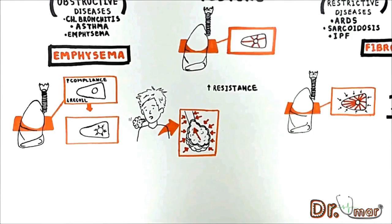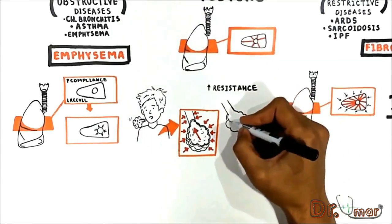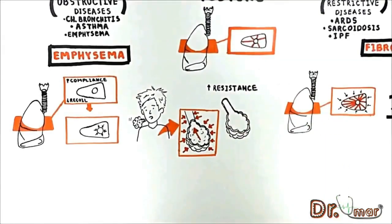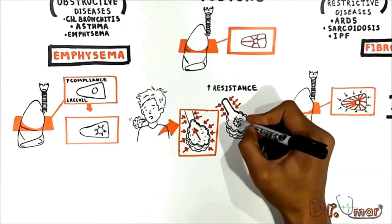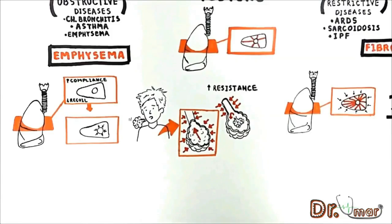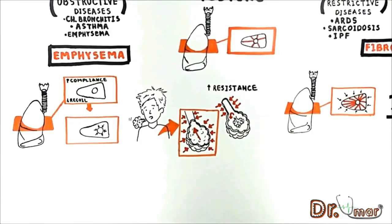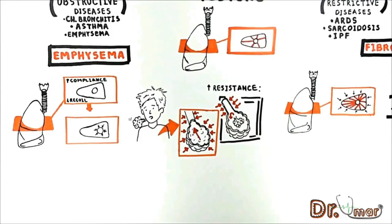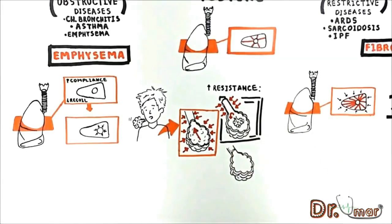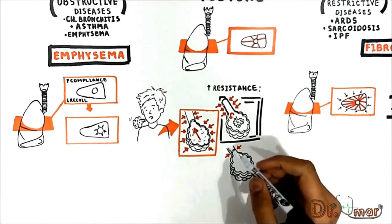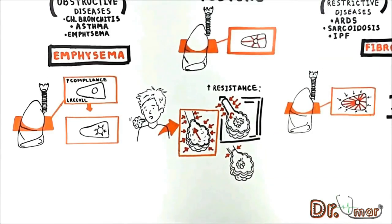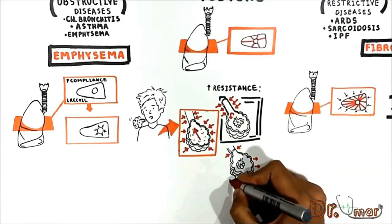Increased airway resistance during expiration leads to two main problems. First, when the bronchioles collapse during expiration, resistance in the airway increases. Thus the alveoli cannot completely push air out and patients mainly have problems with expiration, not inspiration. Second, when the bronchioles collapse during expiration, the alveoli cannot completely push air out, so excessive air remains in the alveoli — this air trapping increases alveolar size.